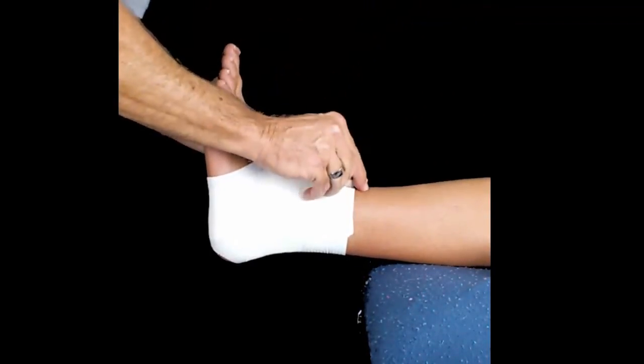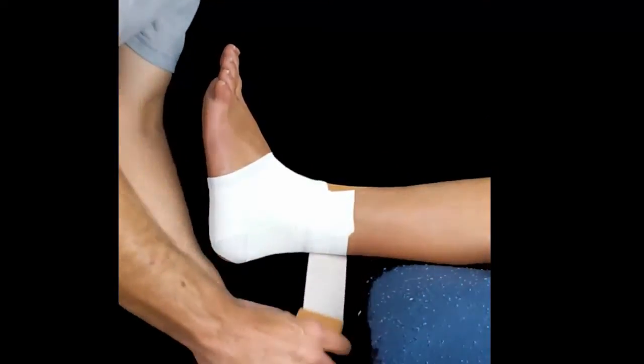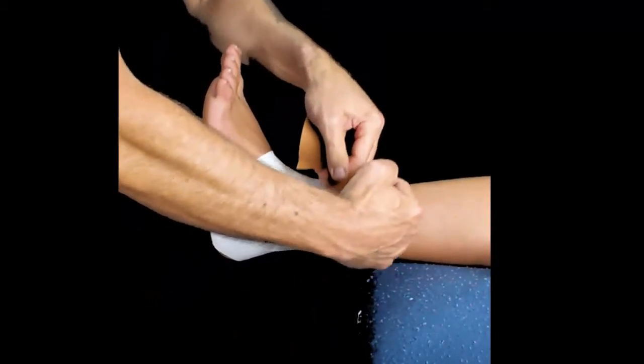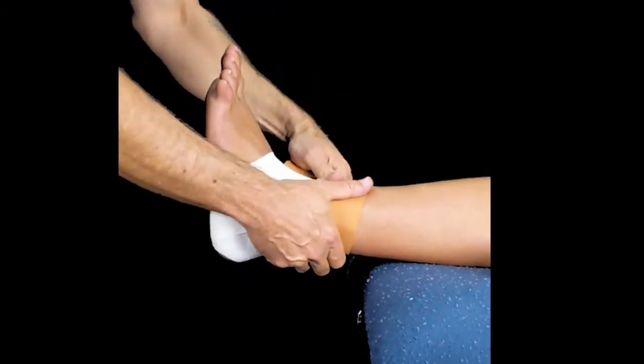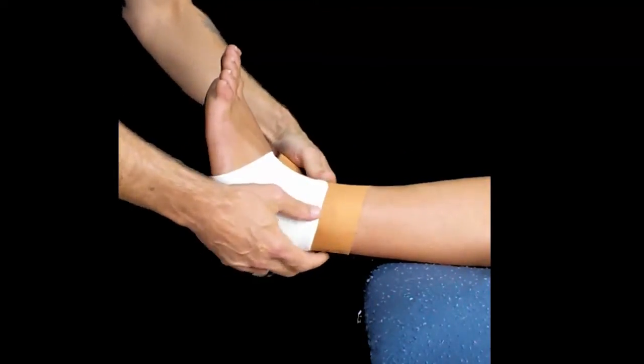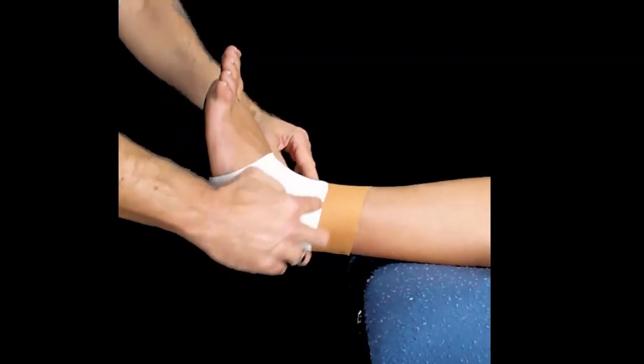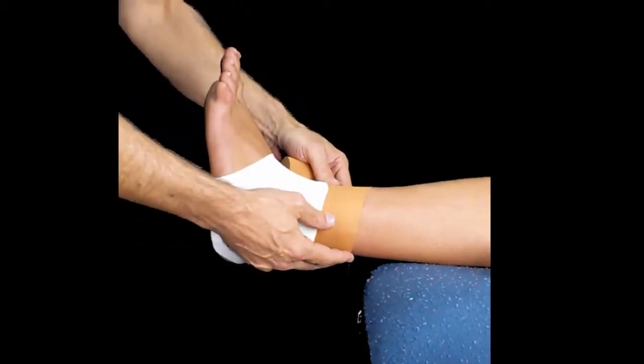We start off with an anchor. The anchor is the foundation point for all our other pieces of tape. Simply take this around the calf. There's no tension on the tape at all. We don't want to pull the tape tight because otherwise we'll cut off circulation to the bottom of the foot. Notice that I've used a slight V in the tape application here, following the contour of the calf around.